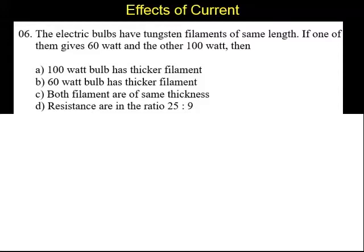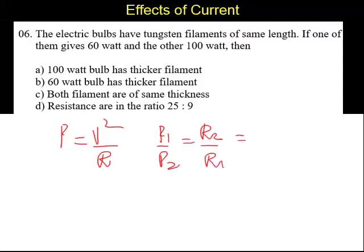Again, we know the relation connecting power and resistance. Power equal to, for a constant voltage, we can say P is equal to V square by R. So for this one, P1 by P2 is going to be R2 by R1. If you substitute R2 and R1, it is going to be 100 by 60 or 1 by 6. So definitely resistance not in the ratio of 25 is to 9.